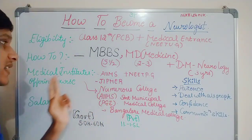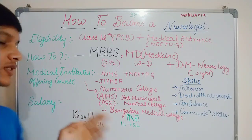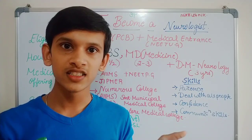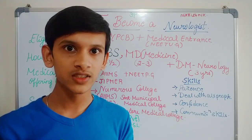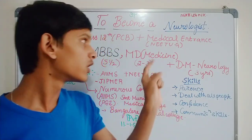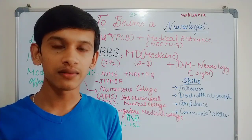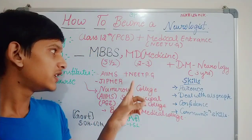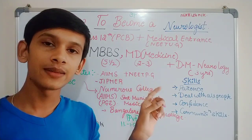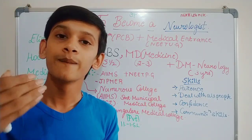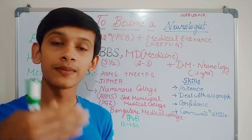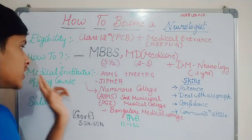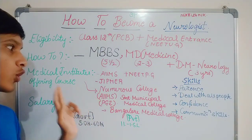Next is medical institutes offering the course. If you have a good score in MBBS, you will get a master's seat. For postgraduate admissions, there are exams like PGR, JIPMER PGR, and AIIMS PG exams. Based on your score in these, you will get admission to the next college.